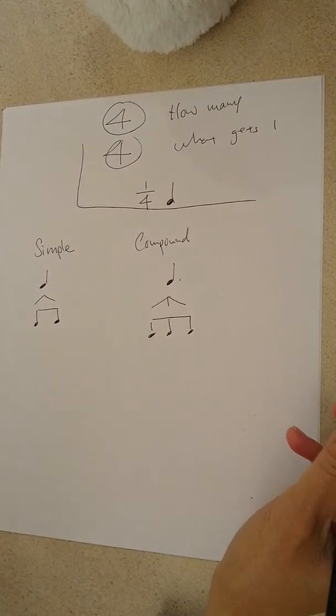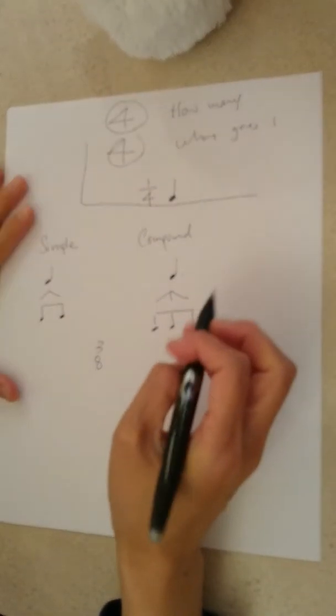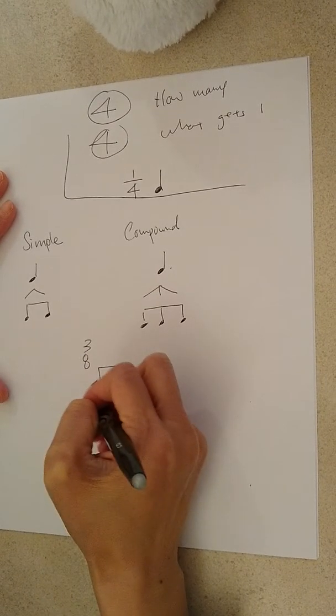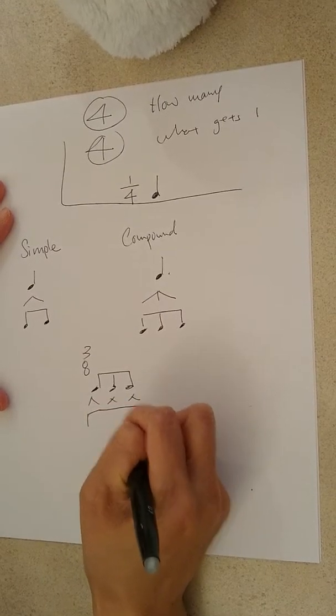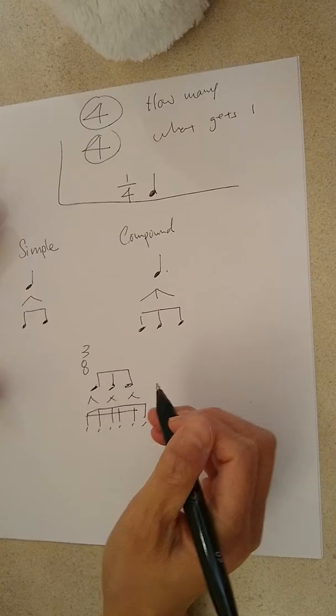The only one that's really very confusing is three eights because we have suspicion that it's compound meter. But it's actually a simple meter because each one of these eight notes divides into two. Sixteen. So therefore, it's compound meter. Ah! It's simple meter.